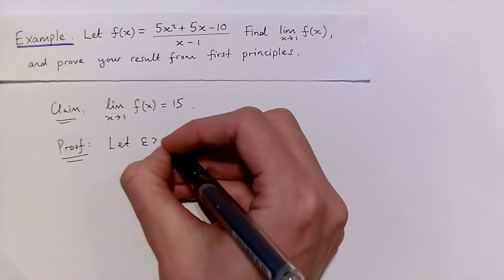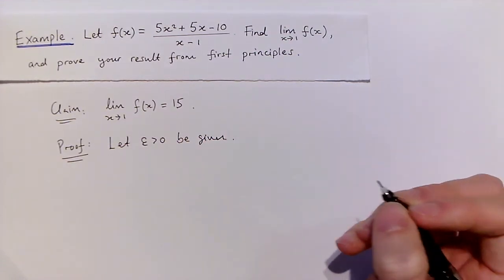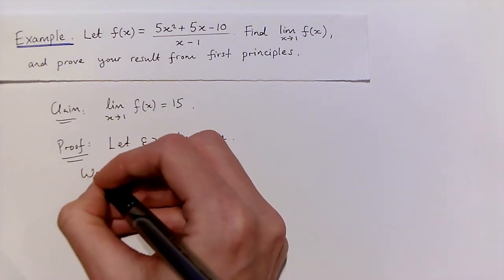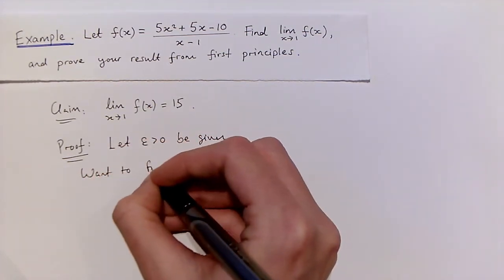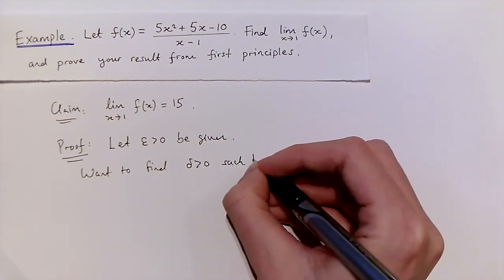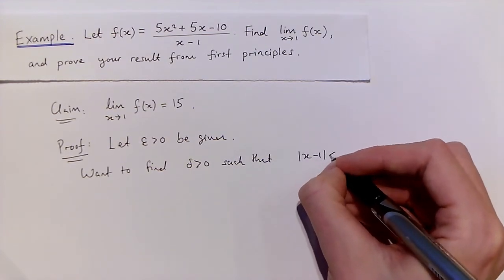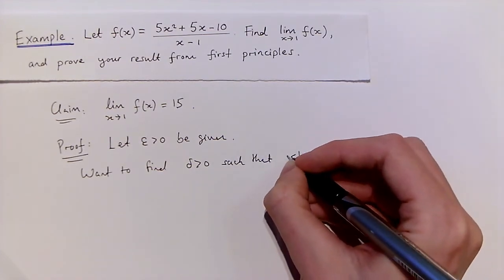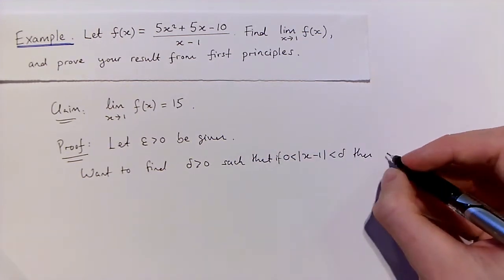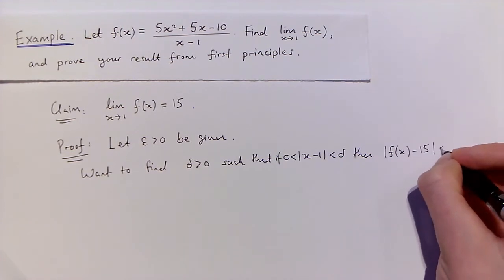So let epsilon greater than 0 be given. Then remember, our aim is to find a positive delta. We want to find some positive delta such that for all x within a distance delta of 1, but not equal to 1, the distance between f(x) and 15 is less than epsilon.